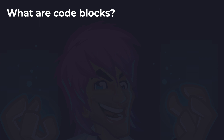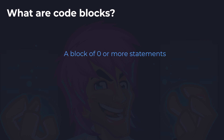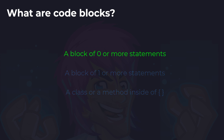The next question: what are code blocks? Are they a block of zero or more statements, a block of one or more statements, or a class or method inside a code block? And the answer is a block of zero or more statements. It simply means you can have an open and closed code block using curly braces with nothing inside — that is still a valid code block. You don't have to have statements inside. A class or a method can exist inside code blocks, but they are not the only statements that can exist.